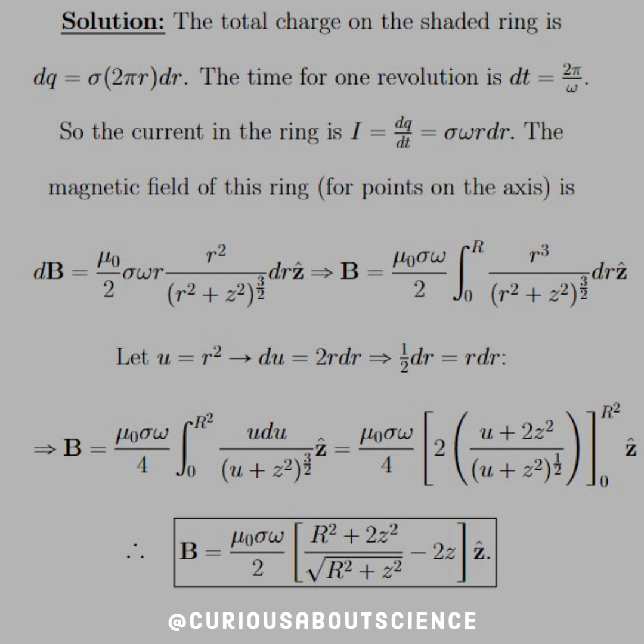We get a pretty quick integral here. Just let u equal r squared. Therefore, du is equal to 2 r dr. Solve that for r dr. Or excuse me, that should be one half du equal r dr.